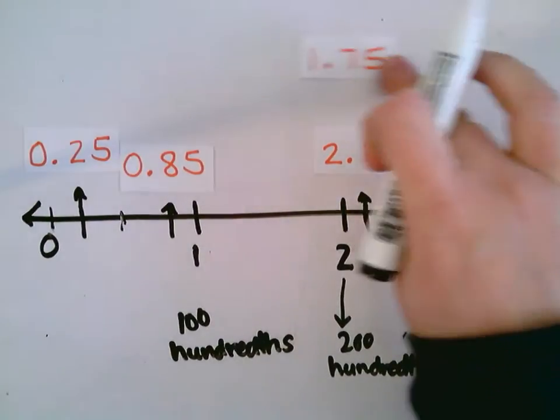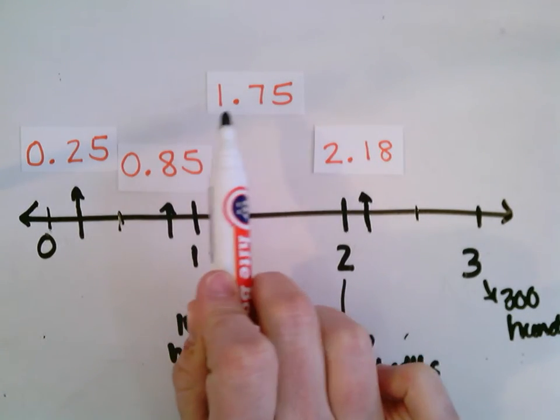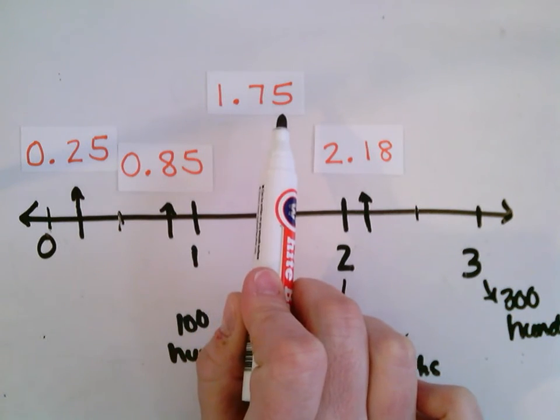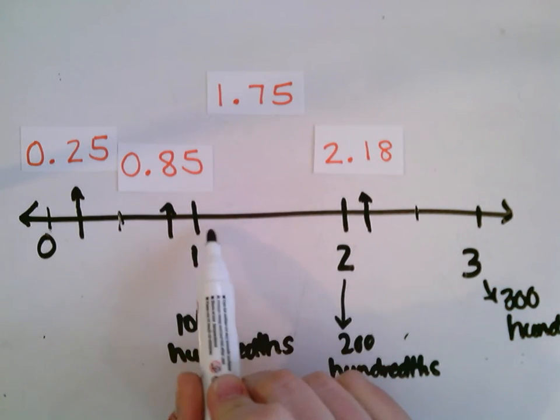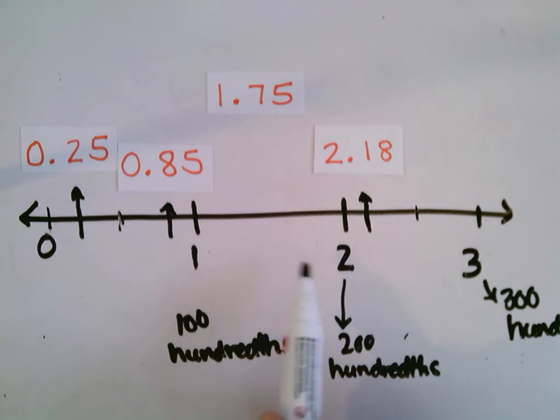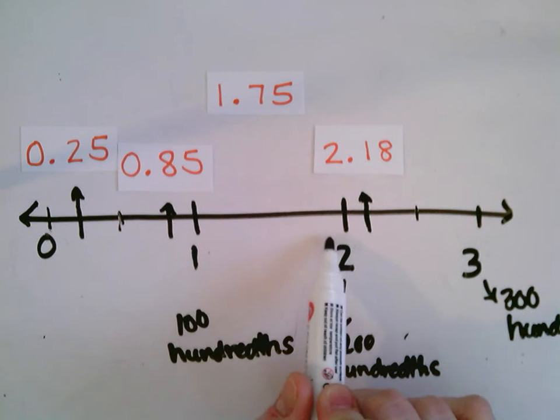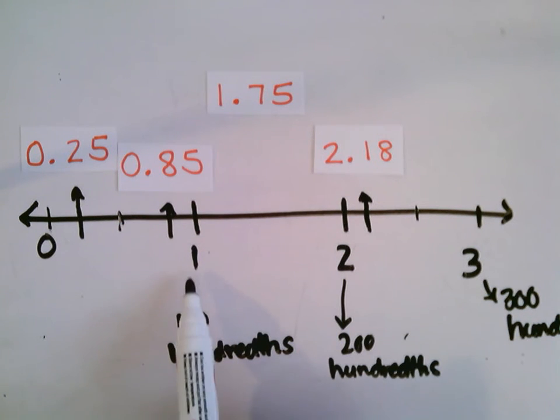Last number, 1.75. 1 and 75 hundredths. So I know my number is going to be greater than 1, but we don't have a 2, so it's going to be coming in between 1 and 2.